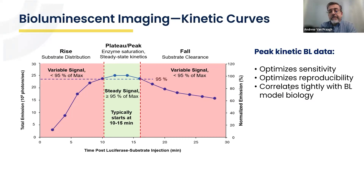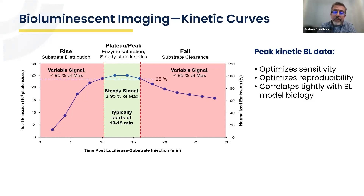An additional and more subtle point is that plateau phase quantities of bioluminescent signal are the only part of the overall kinetic curve that is actually tightly correlated with the biology of your model. The biology of your model means the number of cells and, within that, the number of luciferase enzymes at any given time. Steady state kinetics is the only phase that shows maximum light production, which is a function of the number of luciferase enzymes — i.e., the number of cells of interest. It is really incumbent on an investigator to exclusively report from plateau or peak kinetic data.